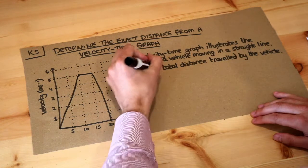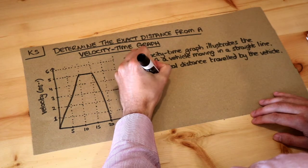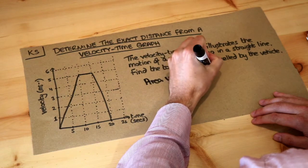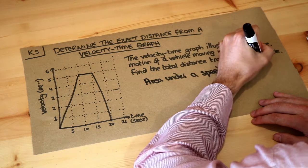Now there's one key point here and it's this: that the area under a velocity time or speed time graph is the distance travelled.